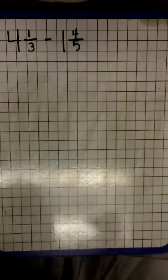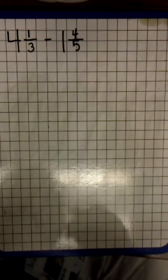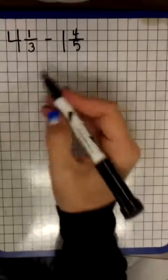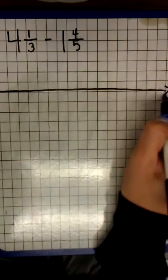I'm going to demonstrate how to subtract mixed numbers with unlike denominators using renaming by using the number line strategy. So first thing I'm going to do is I'm going to draw a number line, an open number line.